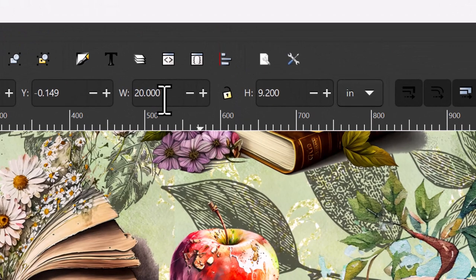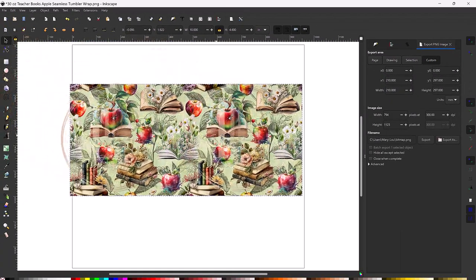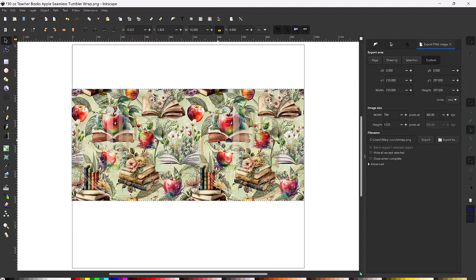Before adjusting the dimensions, make sure the lock icon between the width and the height is in the lock position by clicking on it. Then select your width and resize it to 10. Your height will automatically resize itself proportionately as long as the lock icon was in the lock position.